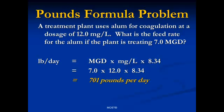MGD times mg per liter times 8.34: 7 is our MGD, 12 is our mg per liter, and when we do our calculation we see that the answer is 701 pounds per day.